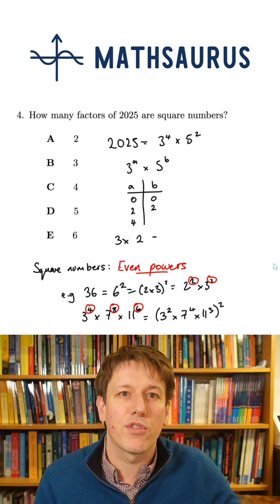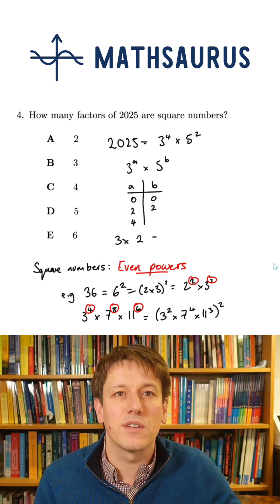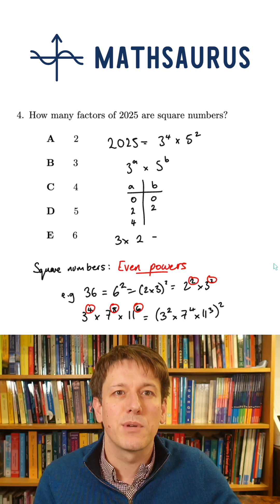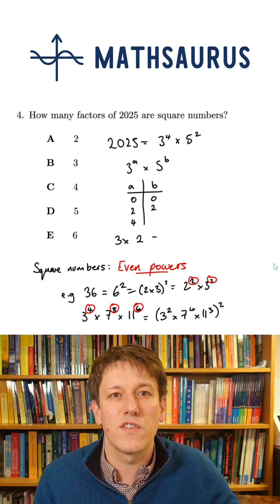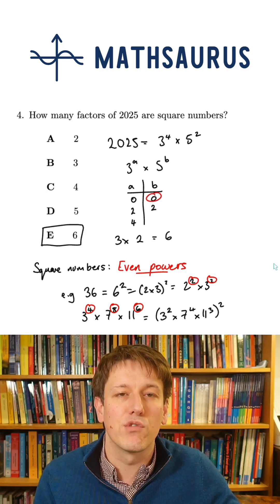so I can do 3 to the power of 0 times 5 to the power of 0, I can do 3 to the 0 times 5 to the 2, and so on. Because there are three choices for a and two choices for b, we get 3 times 2, or 6 options overall.